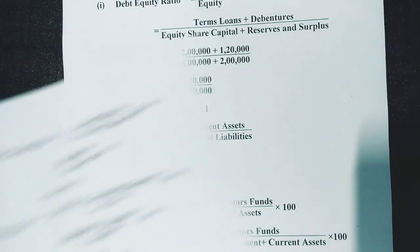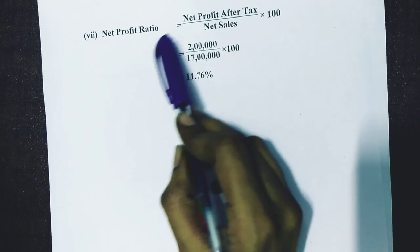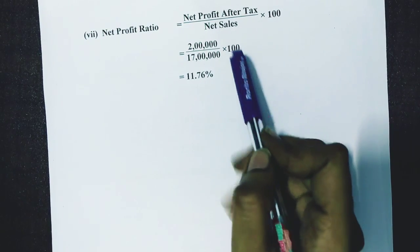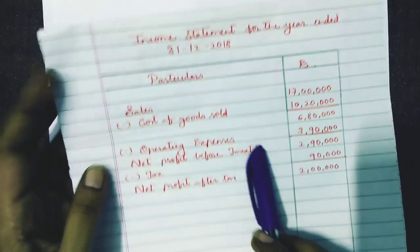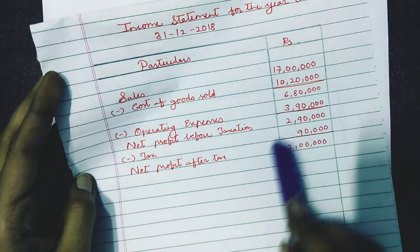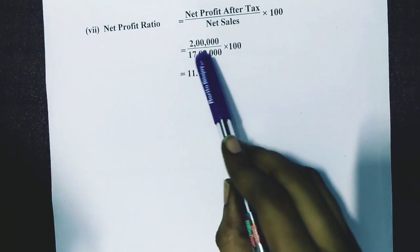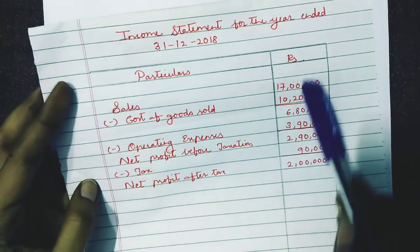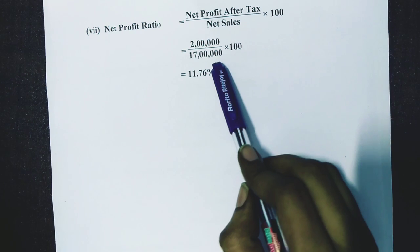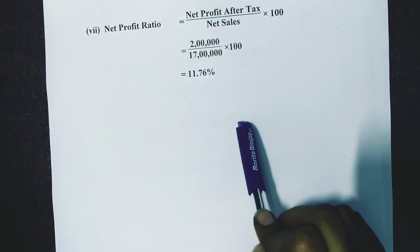The next one is the net profit ratio. The formula is net profit after tax divided by net sales into 100. As discussed earlier, in the income statement, the last amount is your net profit after tax. For a sum without adjustments, this is rupees 2 lakhs. Net sales is the sales figure given at the start — rupees 17 lakhs. So 2 lakhs divided by 17 lakhs into 100 equals 11.76 percent.